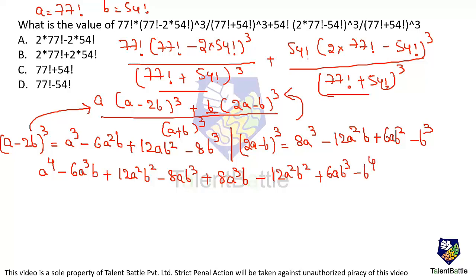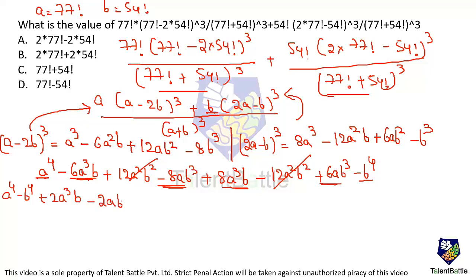Let's simplify the numerator by pairing like terms. The a⁴ and −b⁴ terms stay. For the a³b terms: −6a³b + 8a³b = +2a³b. For the a²b² terms: +12a²b² − 12a²b² = 0, they cancel. For the ab³ terms: −8ab³ + 6ab³ = −2ab³. So the numerator simplifies to: a⁴ − b⁴ + 2a³b − 2ab³.